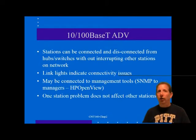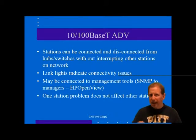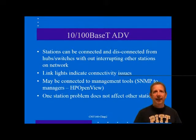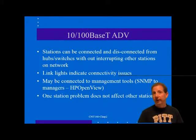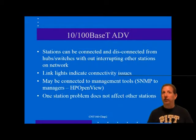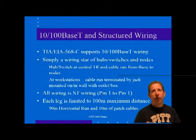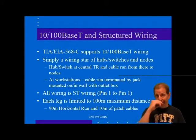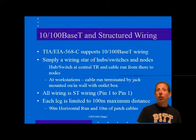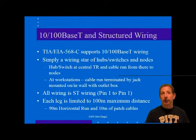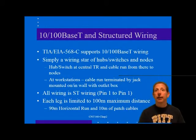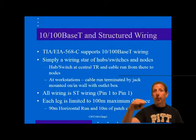Some installations use the other two pairs for a telephone connection or for another 10/100BaseT connection — be wary of telephone installers using your network wiring pairs. Telephone wiring is often at cross-purposes with network wiring, and the standards and installation practices are different. The TIA 568C wiring standard supports 10/100 wiring. 100BaseT requires Category 5 or greater to run its rated distances, though it may operate for shorter distances on a lower category of cable. Cabling 10/100T is simply a wiring star of hubs and nodes; generally a hub is located centrally, perhaps in a TR, and station cables are run to each workstation location.